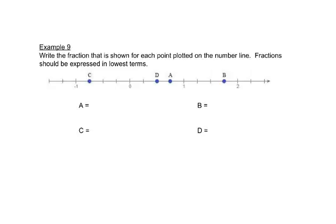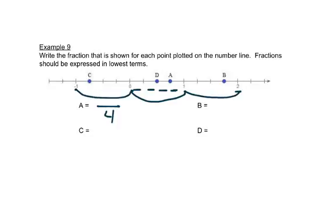Now we're placing fractions on a number line. The points 0, 1, 2, and negative 1 are spaced out. First we figure out how many spaces there are between each whole number. Between 0 and 1 there are 4 spaces, meaning the whole is cut into 4 pieces. That gives us our denominator of 4, and this holds true between any two whole numbers on this line.